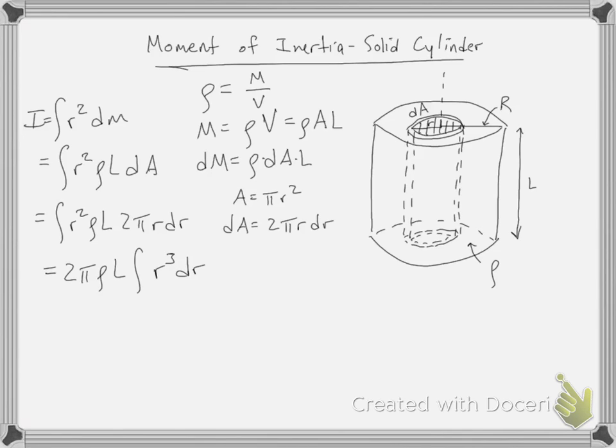So what are our limits? Well, we're going from the central axis, which is a radius 0, out to the outer radius of capital R. So now we can integrate 2 pi rho L, and the integral now is r to the fourth over 4, evaluated from 0 to capital R.